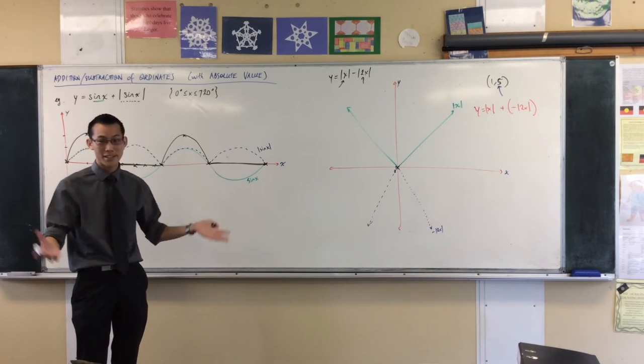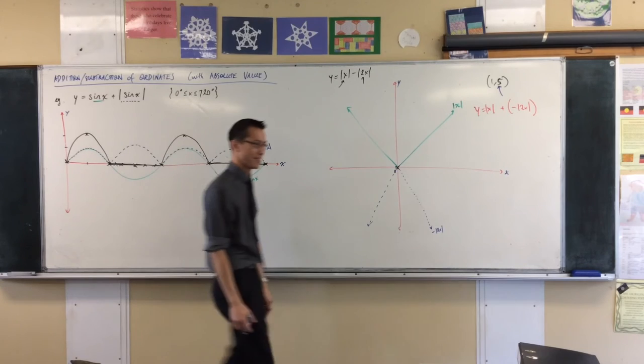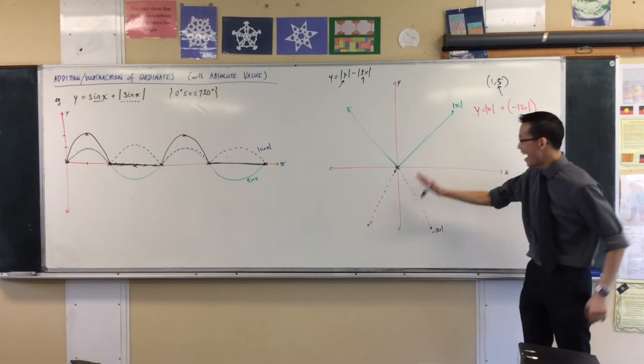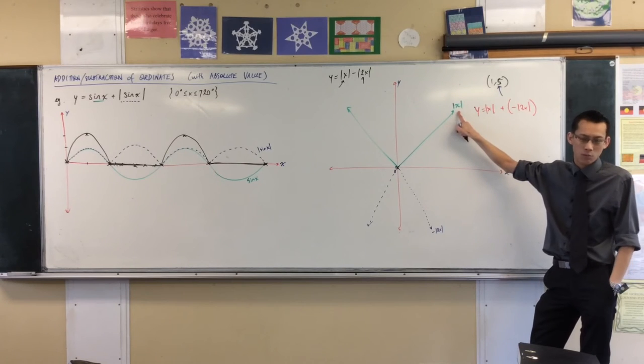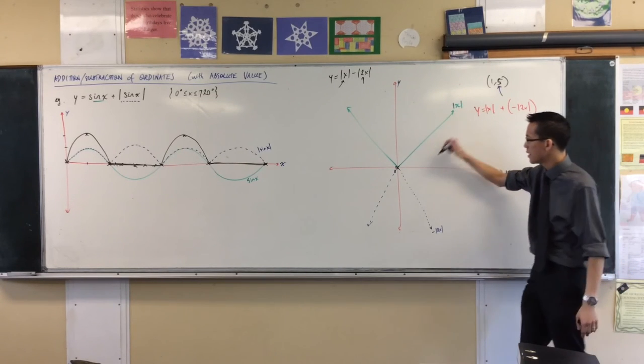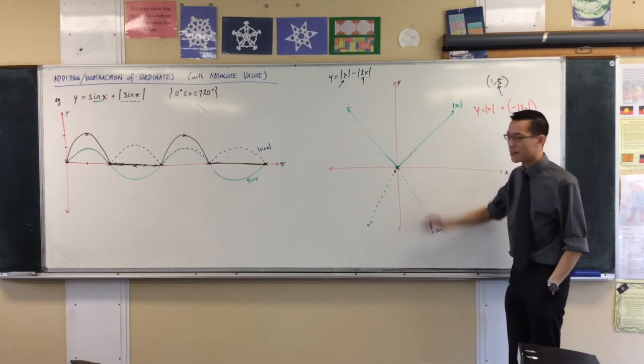X equals 1, super easy. I mean, pick a hard one if you want, but I'm not going to do that on the board. At x equals 1, I know exactly what this graph is equal to. It's 1. What's the absolute value of 1? 1. So if I put that there, that's fine.